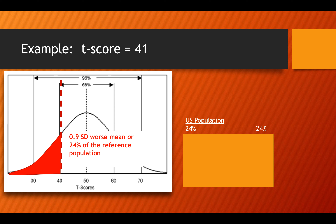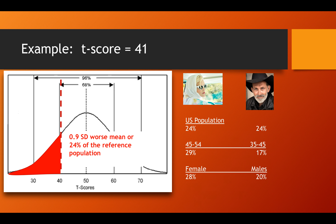The PROMIS measures also allow us to adjust for age and gender, and that's shown here for a T-score of 41. Notice that a T-score of 41 gives you some difference according to age. A patient who is 50, for example, with a T-score of 41 would have physical abilities equivalent or better than 29% of the US population, as compared to a patient who is younger — maybe 40 years old — with a T-score of 41, who would be equivalent or better than only 17% of patients in the general population. Gender-specific percentiles are also provided, where for a female patient with a score of 41, they would have physical abilities better or equivalent to 28% of the general population, as compared to 20% for males.